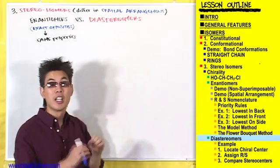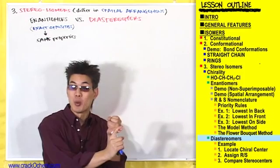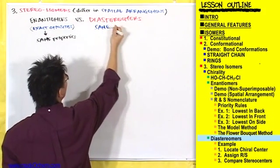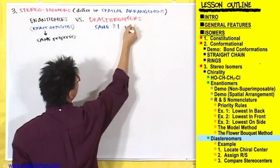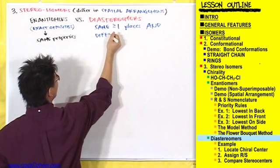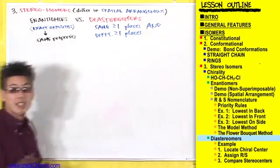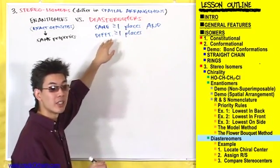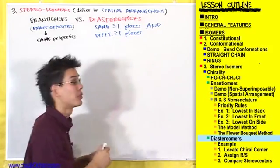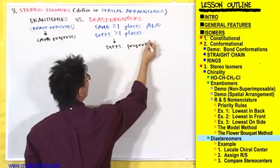Beneath diastereomers, write that these guys are the same at one or more places and different at one or more places — not either/or. So diastereomers are the same at greater than or equal to one places, and different at greater than or equal to one places. This causes them to have different properties.